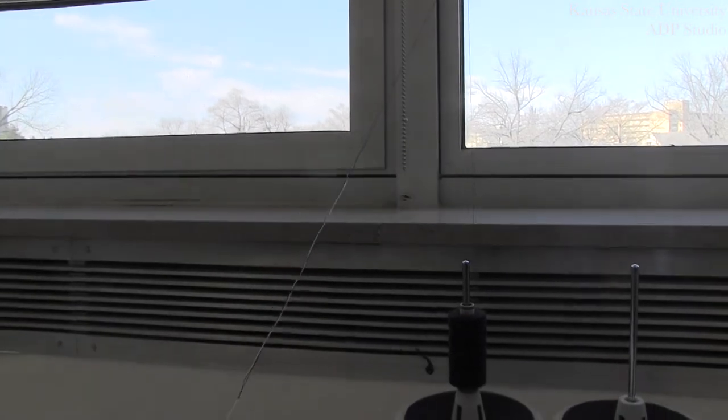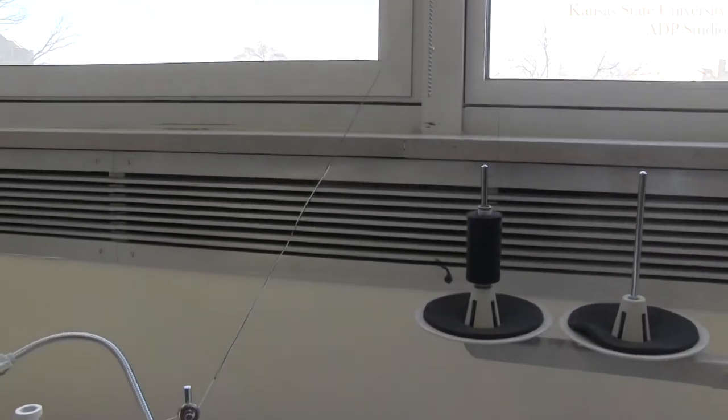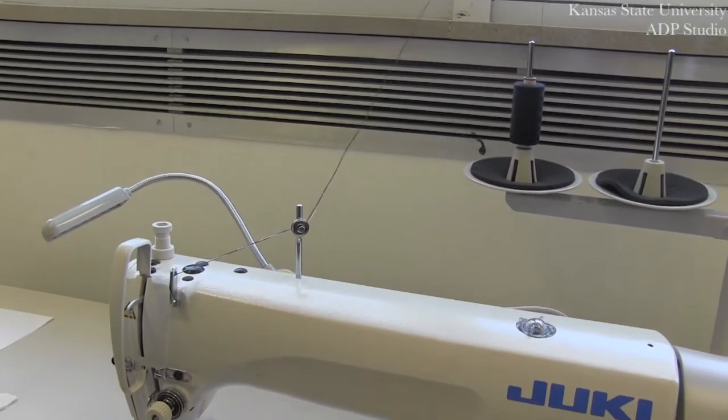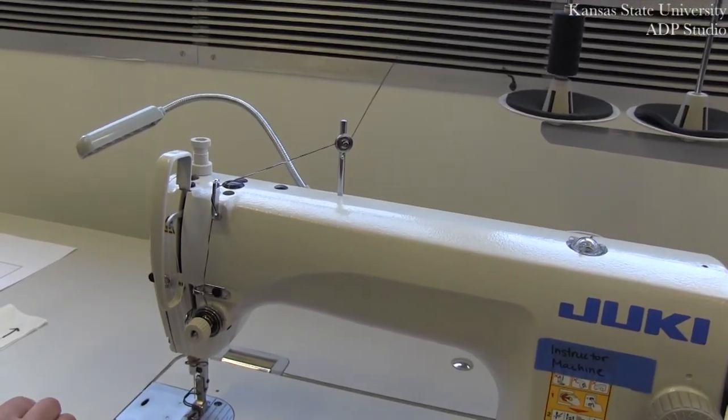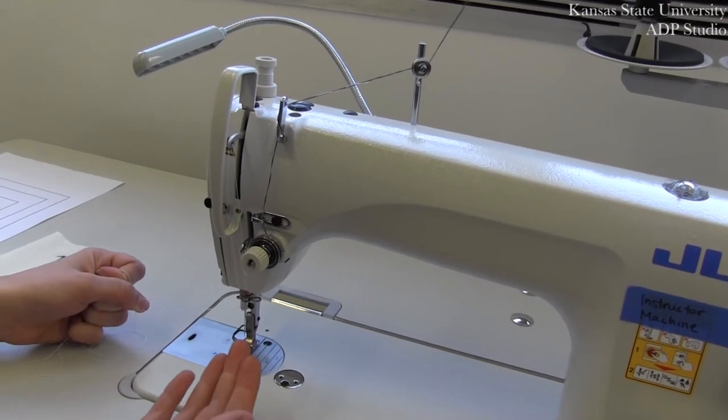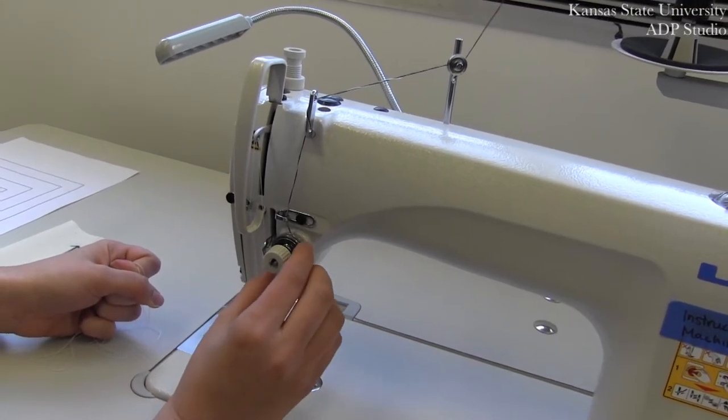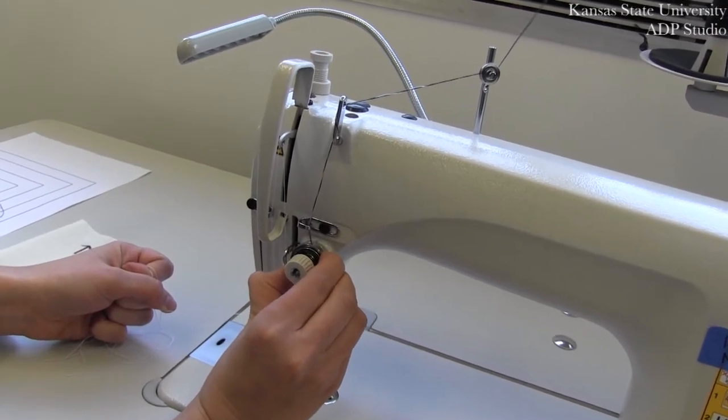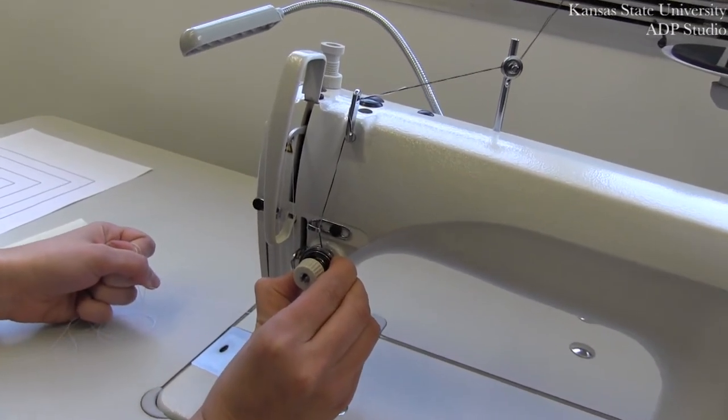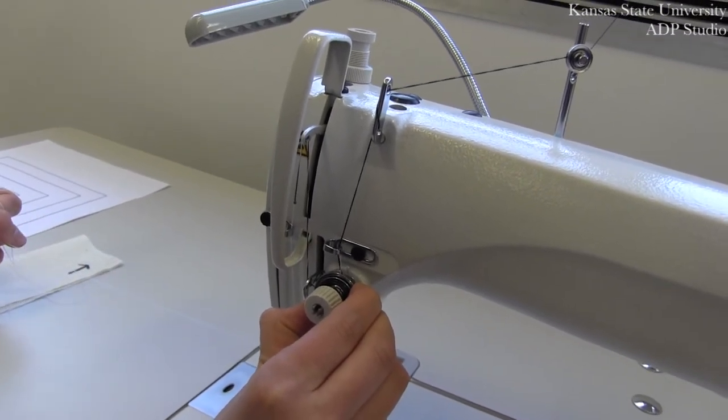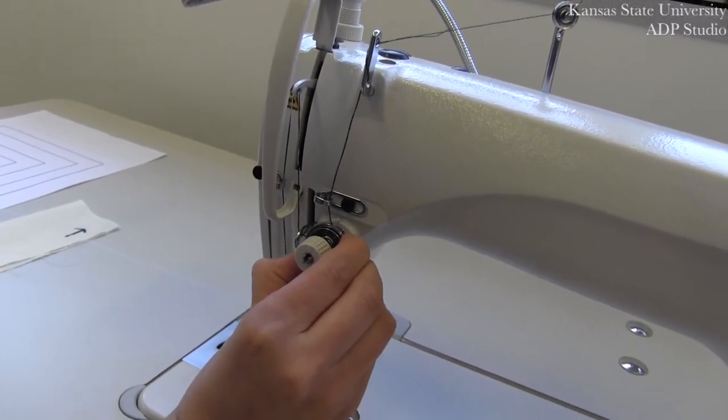If your knot does break, you can retie the two thread ends. When reaching a tension plate, you might notice that you will feel some tension. You can move your knot through by gently lifting the plate away. That gives a little bit more room for the knot to pass through the tension plates.